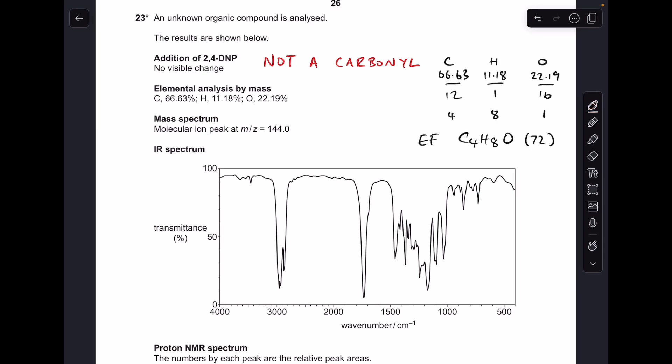Next thing I've done is worked out the empirical formula from that elemental analysis by mass. You can see that's coming out at C4H8O, and you should always calculate the MR of the empirical formula, so that's 72.